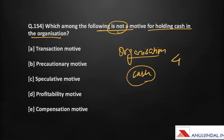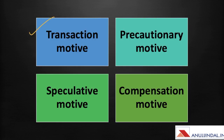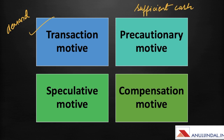The first is the transaction motive. Business firms and individuals keep cash to meet the demand arising out of day-to-day transactions. The necessity of keeping a minimum cash balance to meet payment obligations from expected transactions is the transaction motive. The second is the precautionary motive — maintaining sufficient cash as a cushion or buffer against unexpected events that might occur in the future.